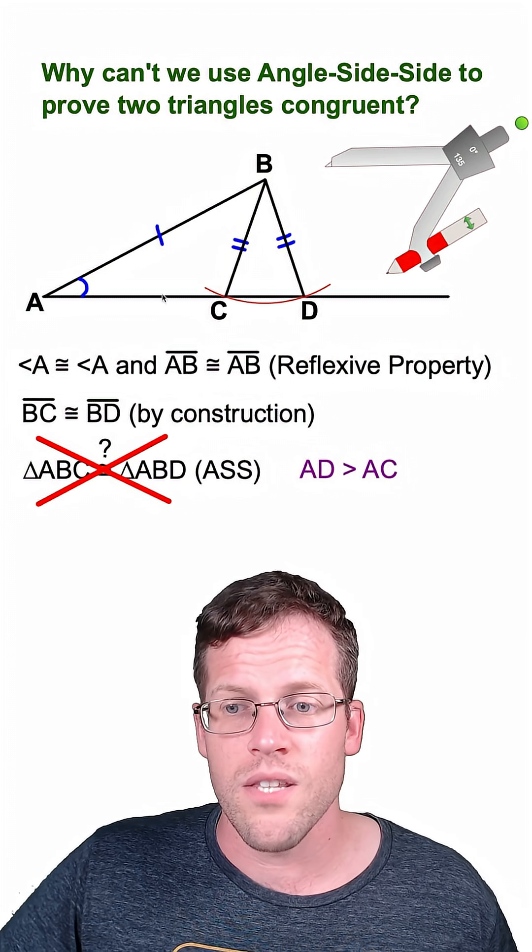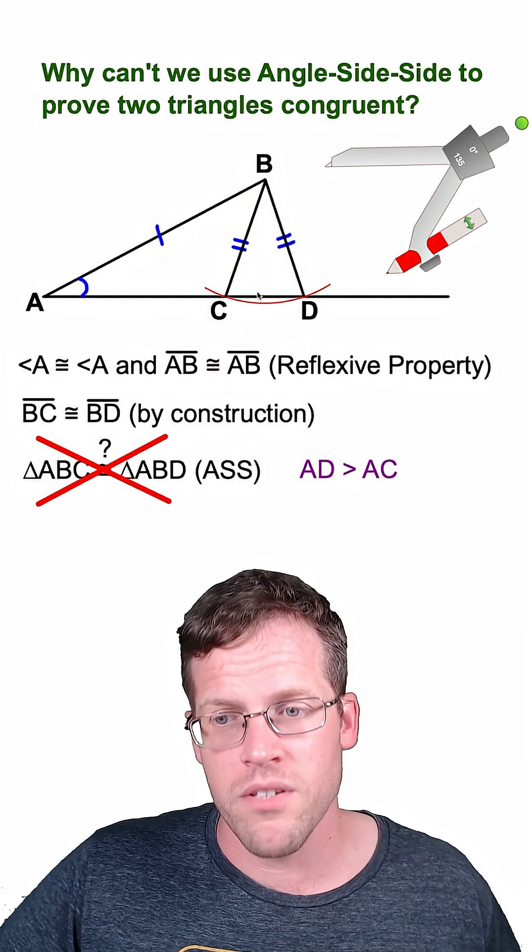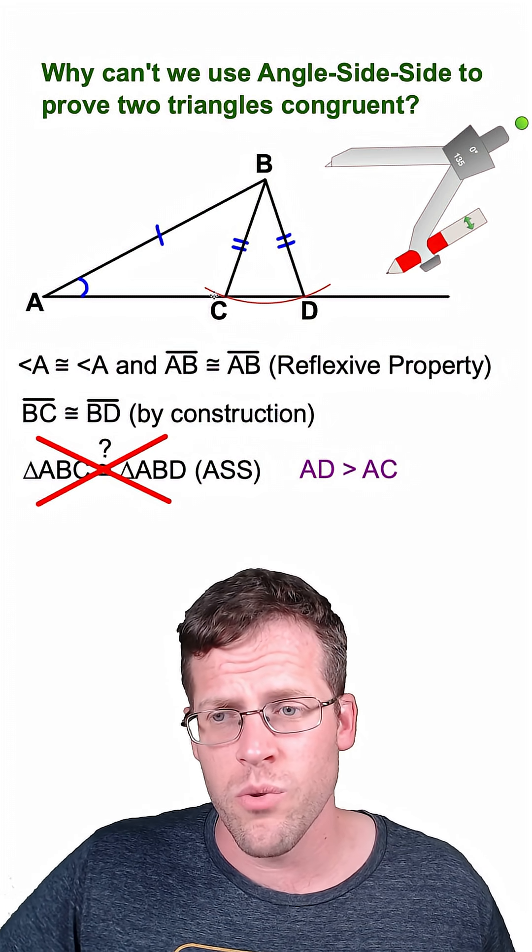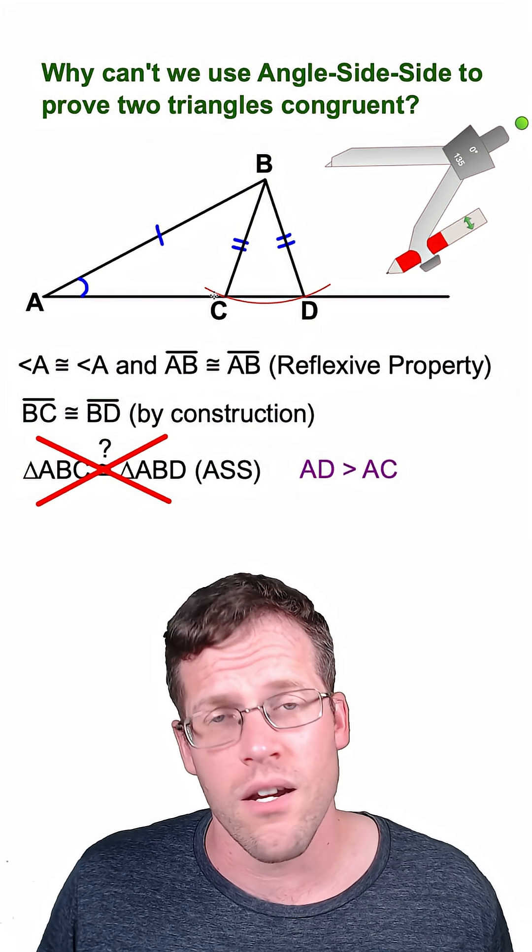And if we look here, notice that line segment AD at the bottom is greater than line segment AC, so that would tell us one pair of corresponding sides are not congruent, so these triangles are not congruent.